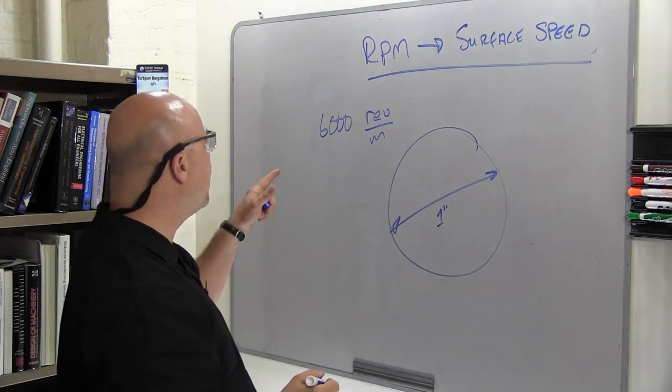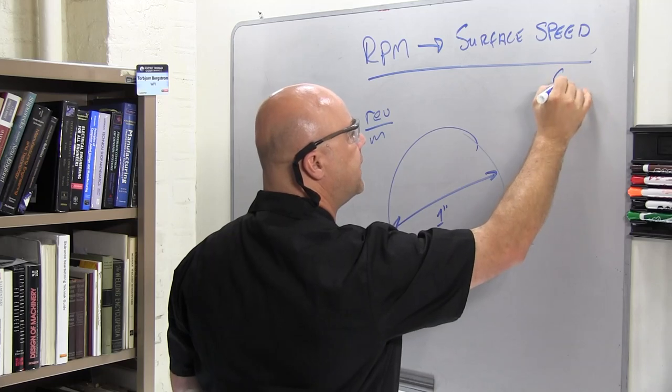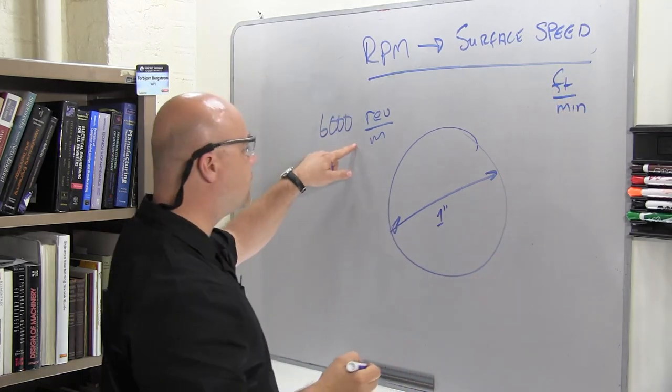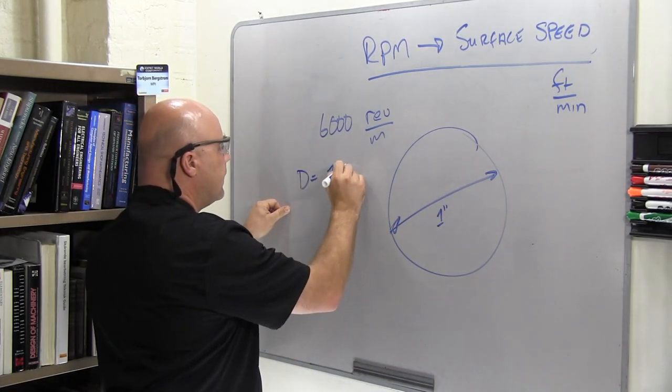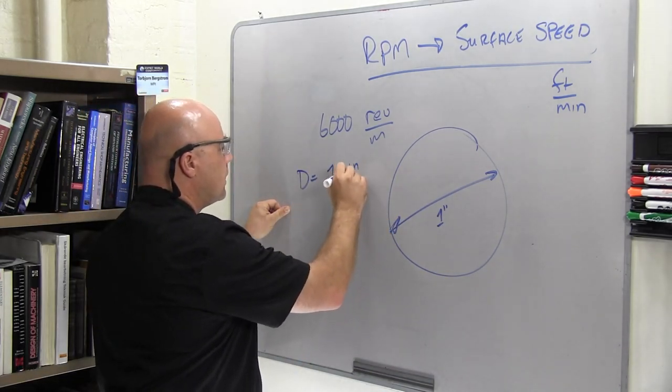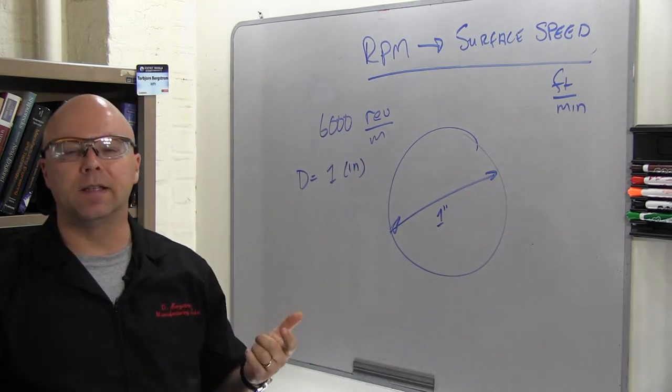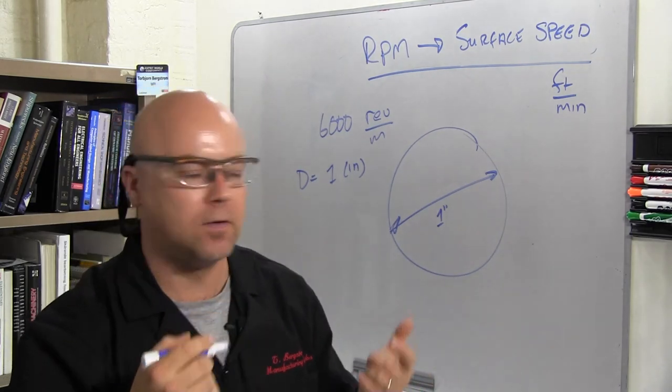So if I want to go from revolutions per minute - remember surface speed is always expressed as feet per minute - if I've got revolutions per minute, I've got a diameter equals 1 inch. What I really need to know is how many inches per revolution, right?